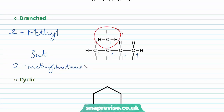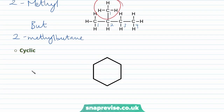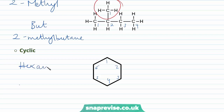We can also get cyclic alkanes. Here we have a skeletal formula for a cyclic alkane containing six carbons, telling us the stem is going to be hex. As it's an alkane the suffix will be ane. Now as it's cyclic we have cyclohexane.